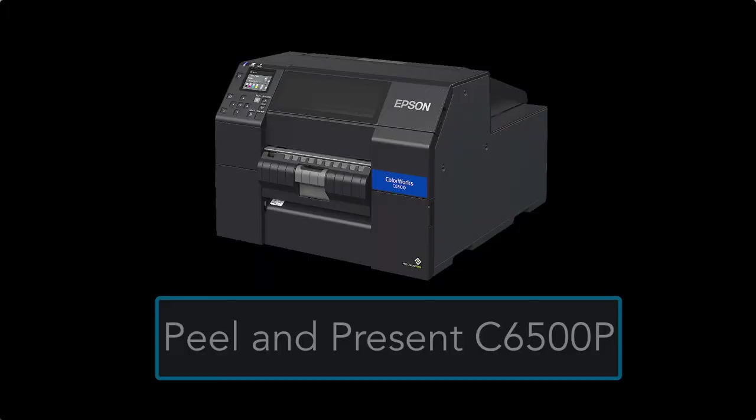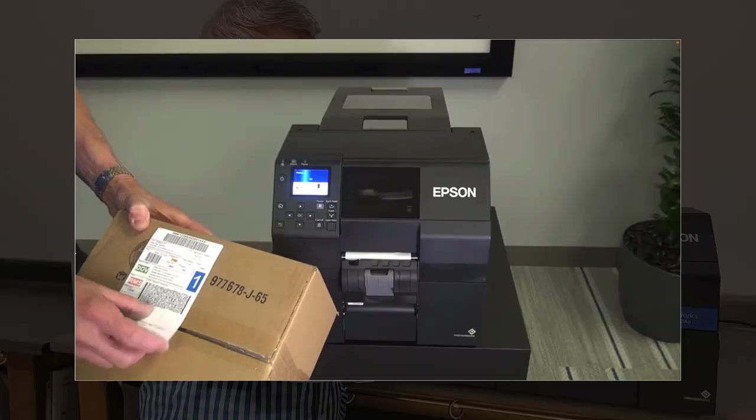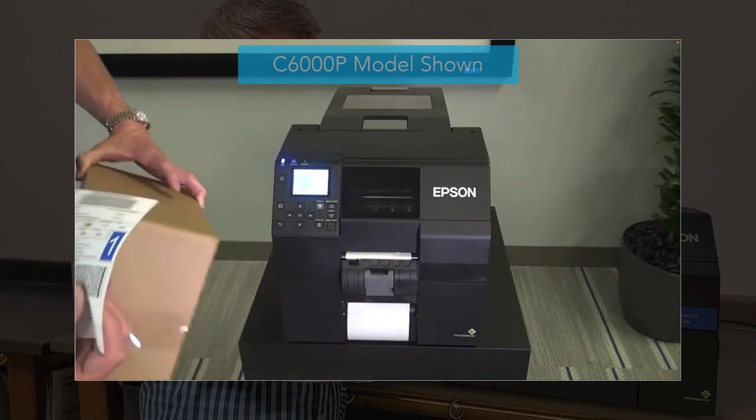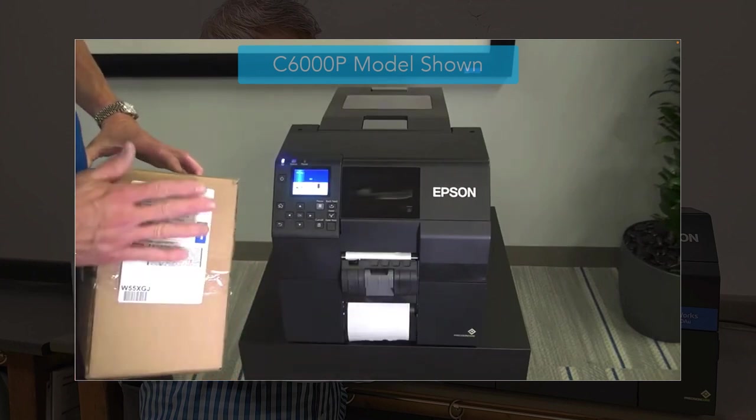The peel and present model. So it's a similar thing, but what it does is it peels the back paper off and it sticks to the part of the label out. So it's already ready to go. It presents the label. So then you could take them individually and say, put them on your boxes at one at a time. You don't have to worry about peeling them.